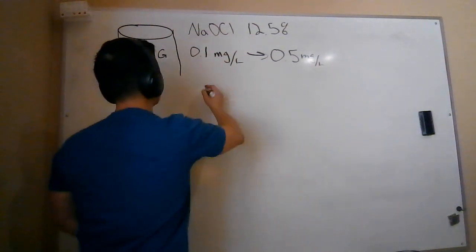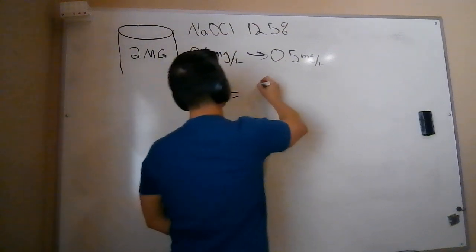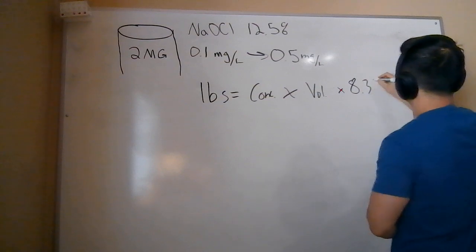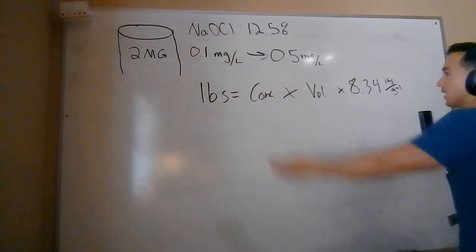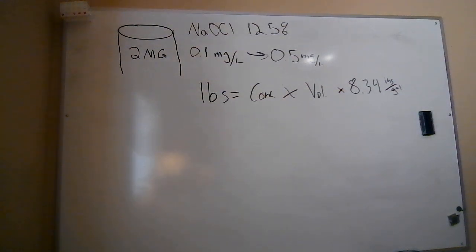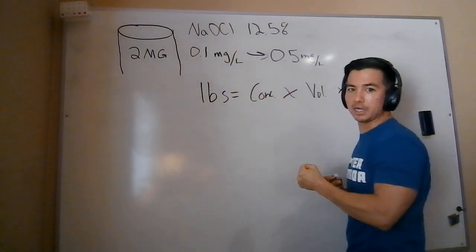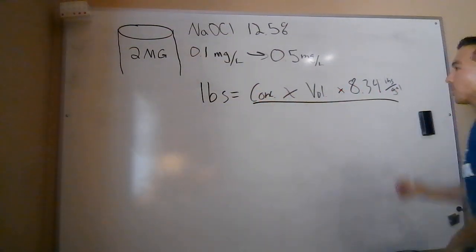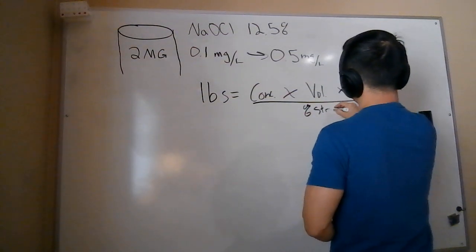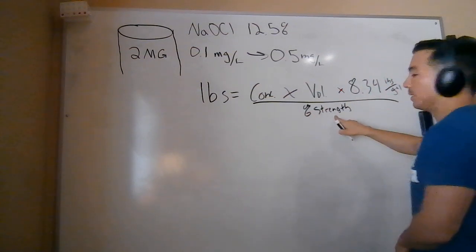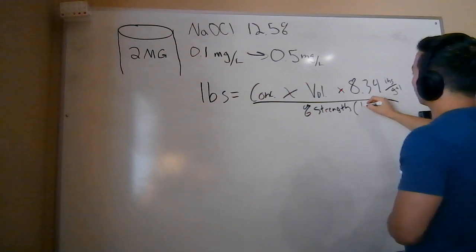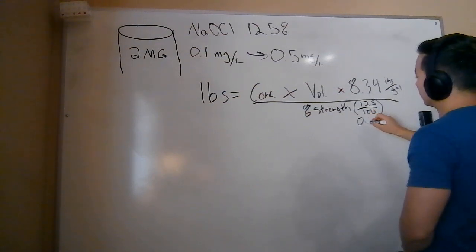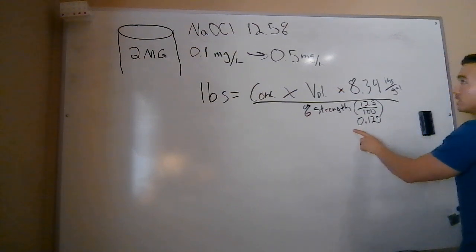We're going to need the pounds formula. In this case, the pounds formula is going to be our concentration times our volume — sometimes it's flow — times the weight of water, 8.34 pounds per gallon. Now this is the classic pounds formula. This works great if what you are using to dose your water with is 100% chlorine. In this case, we're only 12.5% chlorine, so we have to add another component to the denominator. We need to factor in the percent strength of whatever we're using — and remember that this percent strength is some number over 100, so here it's 12.5 over 100. The number we plug into our calculator is going to be 0.125 — we need to plug it in as a decimal, not as a percent.